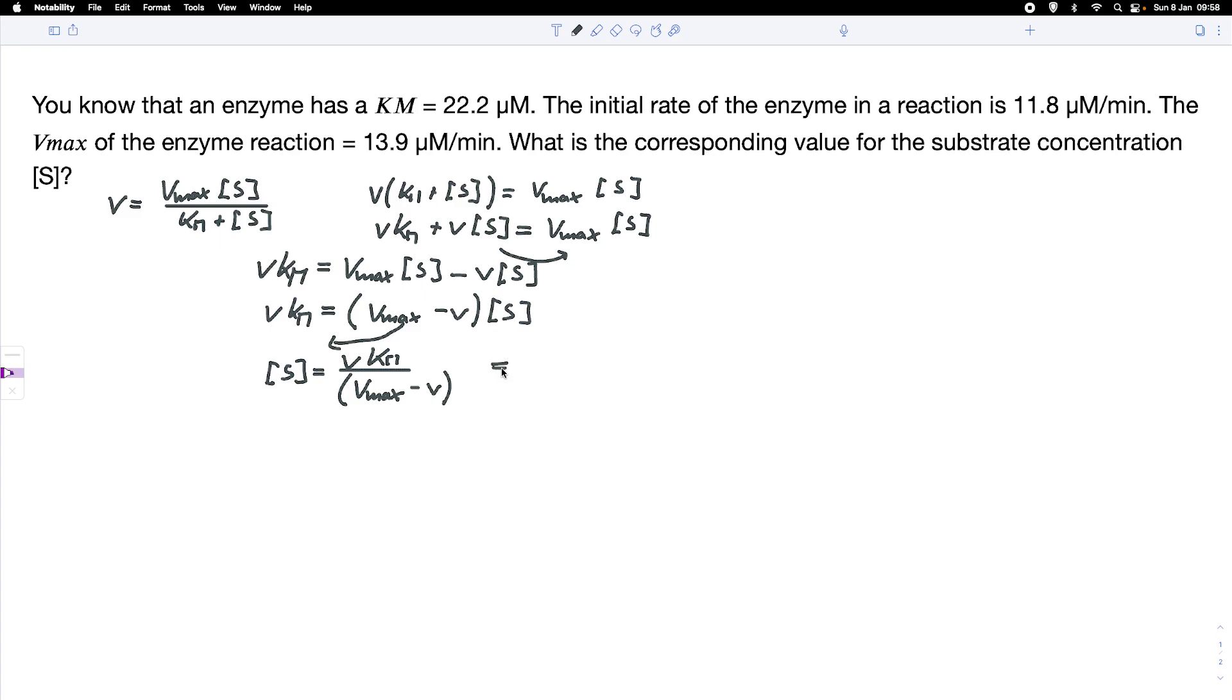And what we can do now is we just simply put in the numbers that we've got. So for the initial rate, we've got 11.8, this would be micromolar per minute, times KM, and that would be 22.2, divided by the Vmax, that is 13.9 minus 11.8.